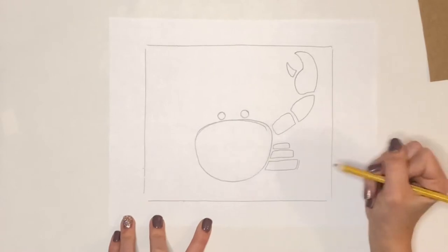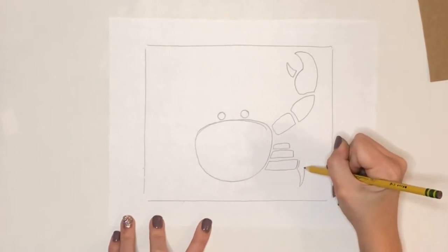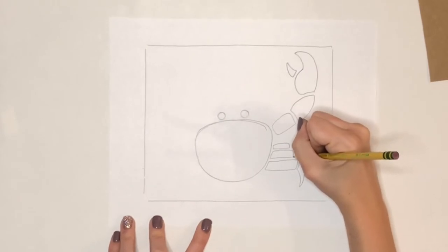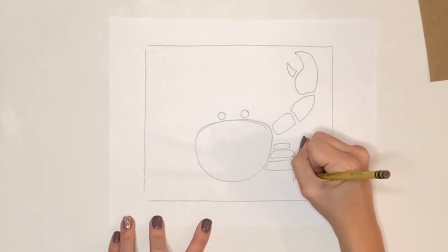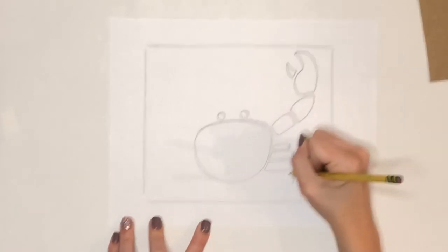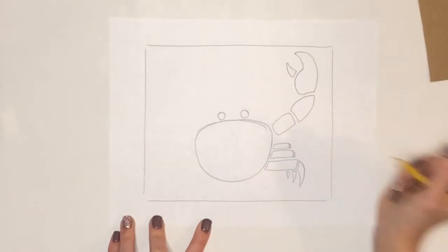Then I'm going to draw in the bottom pinchers of those legs, those little pointed tips that come down, and I'm going to make this edge a little bit more rounded. Add in the next shape down here and do the same thing for the top one. I'm rounding it down a little bit and adding in that triangle at the bottom.